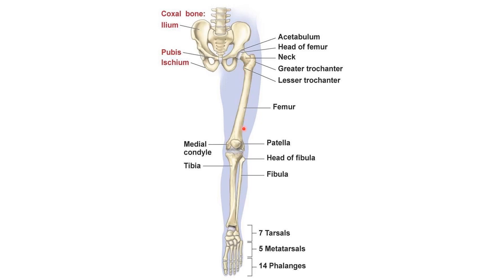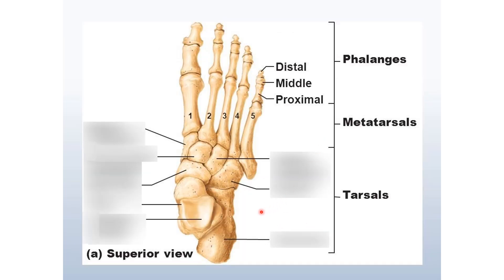The bones of the lower limb are formed of the femur — the longest and strongest bone. The femur articulates with the tibia and fibula to form the knee joint. In front of the knee joint there is the patella. Below this is the leg, where the calf muscles are present. The foot is formed of tarsal bones, metatarsal bones, and phalanges — proximal, middle, and distal — which form the toes.